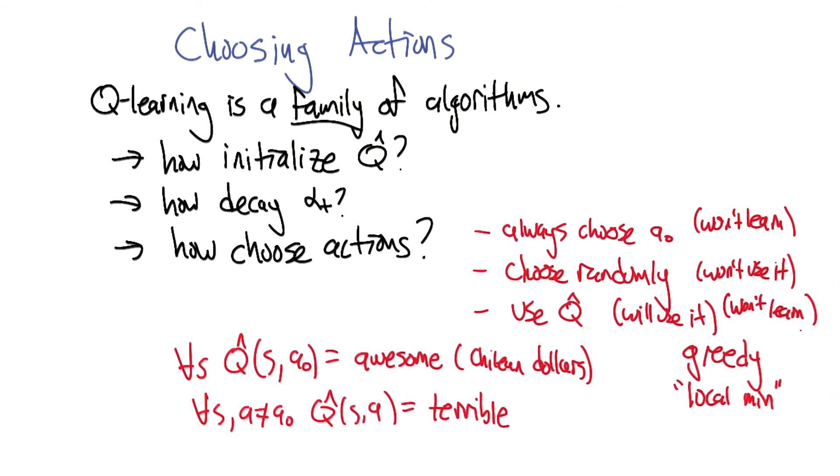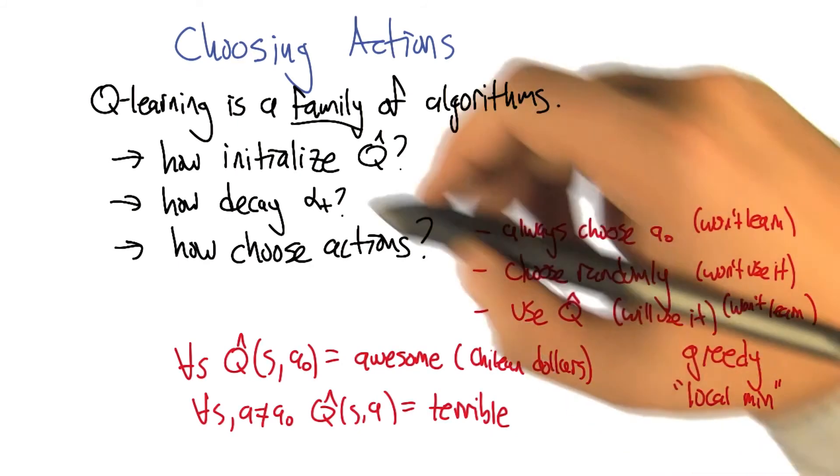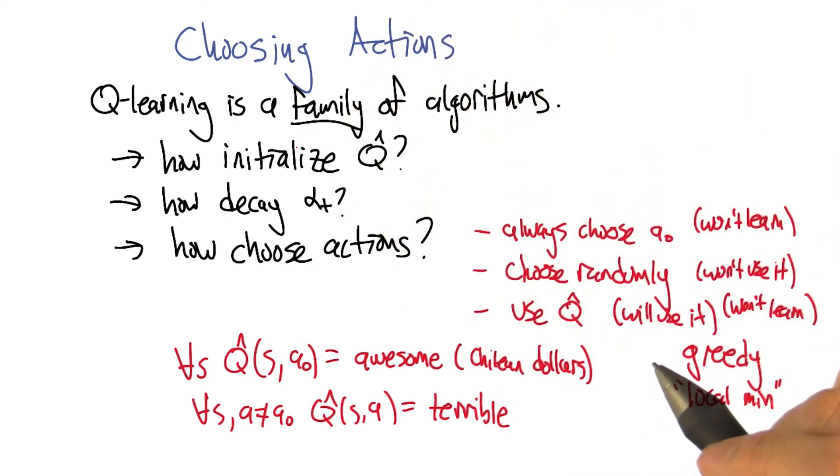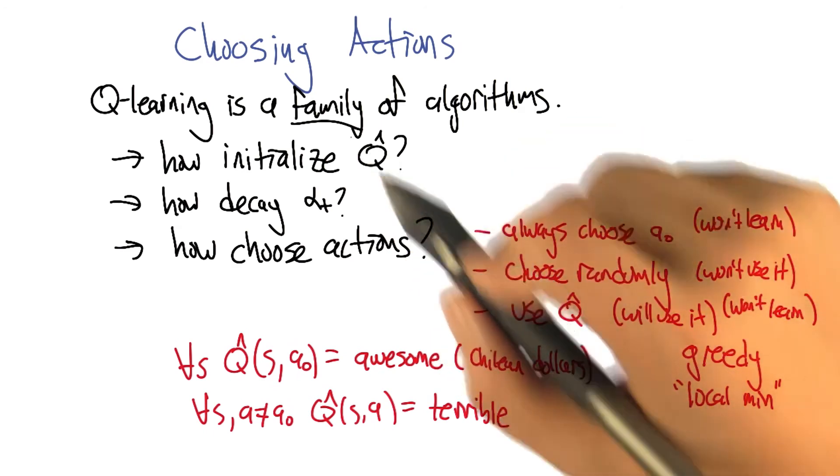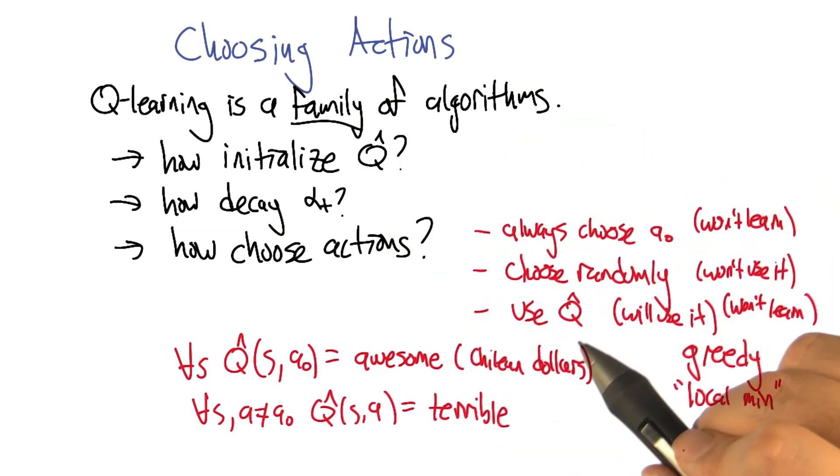That's right. And so, in that bad situation, and I admit it is a little contrived, because I've never even been to Chile, is that it won't learn. It'll actually be exactly the same as this first case, always choose a sub zero. So, that seems problematic too. And it interacts in an interesting way with the initialization, right? So, maybe we can do this idea of using Q hat, but we have to be much more careful about how we initialize. What I want to do is something like random restarts.